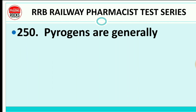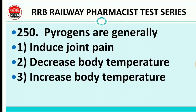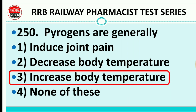Question 250: Pyrogens generally induce — joint pain, decreased body temperature, increased body temperature, or none of these? The right answer is increased body temperature. Pyrogens ki main effect hoti hai increased body temperature, jiske karan fever hoti hai. Fever ko reduce karne ke liye antipyretic drugs use karte hain — for example, paracetamol, which is an analgesic and antipyretic. Antipyretics pyrogens ko inhibit karte hain aur body temperature ko normal pe laate hain.